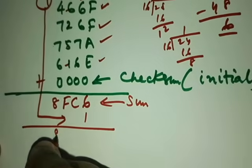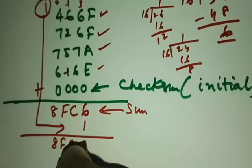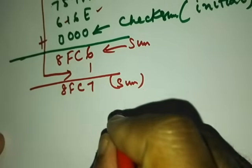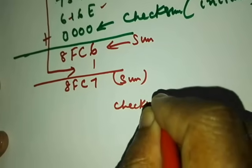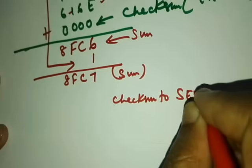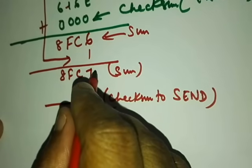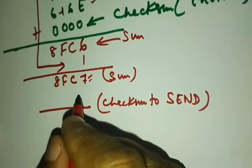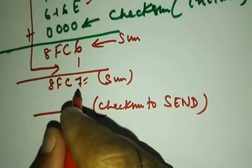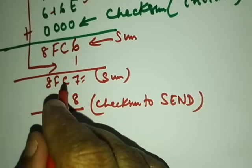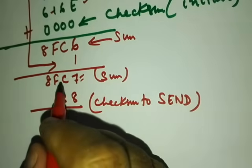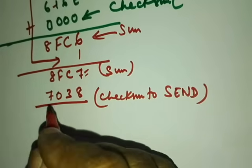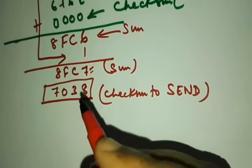After adding the carry, the actual sum is 8fc7. To get the checksum to send, we take the 1's complement of this sum — that means subtracting each hex digit by 15. So: 15 minus 7 is 8, 15 minus c (12) is 3, 15 minus f (15) is 0, and 15 minus 8 is 7. So the checksum from the sender side is 7038.